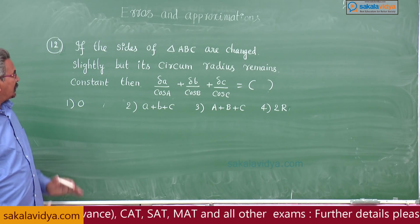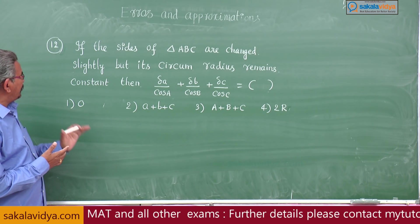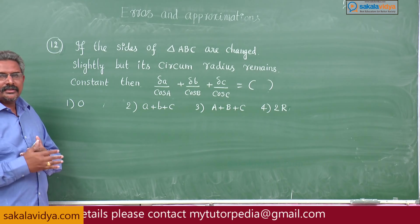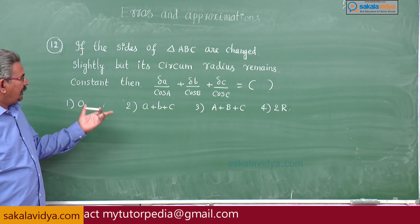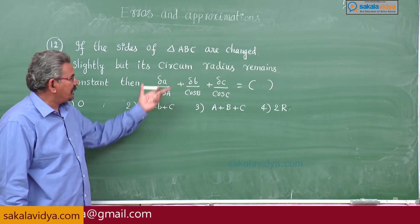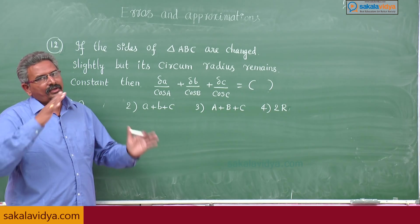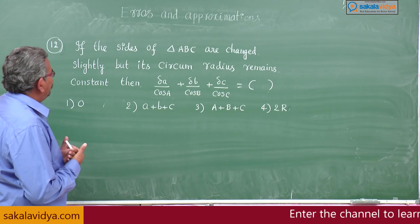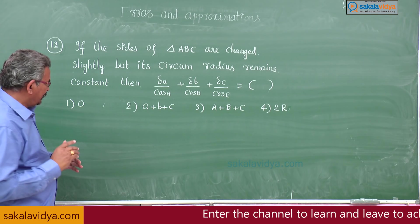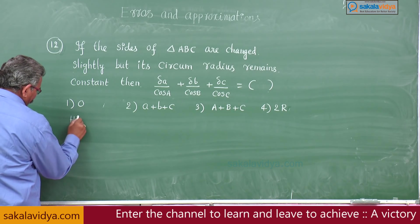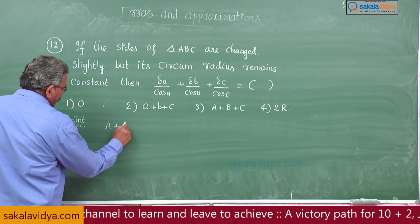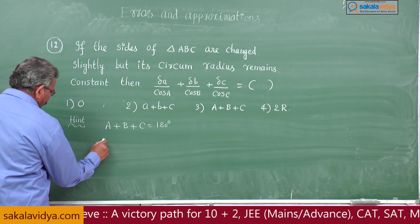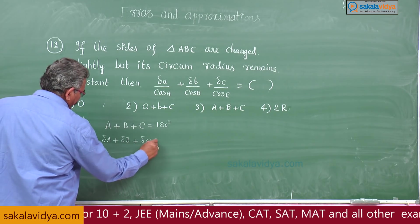12th problem: if the sides of triangle ABC are changed slightly but its circumradius remains constant, then delta A by cos A plus delta B by cos B plus delta C by cos C we have to find out. This is the application of calculus with properties of triangle. See, in a triangle ABC we know that angle A plus angle B plus angle C is equal to 180 degrees.